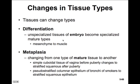Tissues can actually change types. The process of differentiation is where we take unspecialized tissue — say of an embryo — and it becomes specialized as the embryo matures. For example, mesenchyme, derived from mesoderm, will become muscle. Metaplasia is where we change from one type of mature tissue to another. For example, the vagina is composed of simple cuboidal tissue before puberty, and after puberty it changes into stratified squamous epithelium.